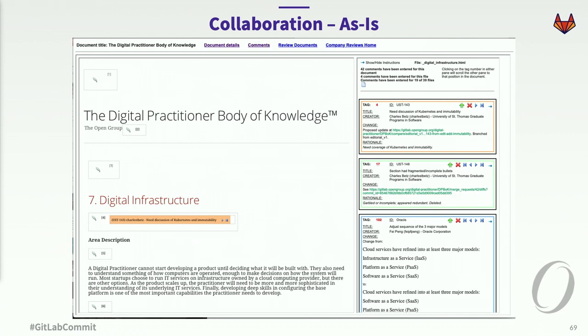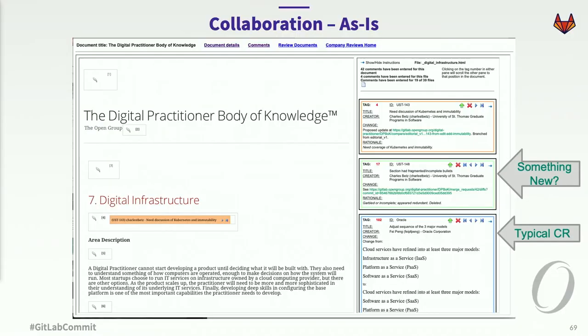I mentioned part of our process is a review — the review by all of our members to say how you would like to change the document to make it acceptable to you. This is an example of our review tool. You can see places where people have made a typical change request saying, 'We need to change how we describe cloud — change these words to these other words.' Some poor person — a hero at the company — has to implement those in the text. But take a look at this one — it's not like the others. You can see the issue the person is concerned about, but what's in there for the change? That's a merge request. So this is an example of how we're moving from this old world of word processing documents to the use of these modern tools.